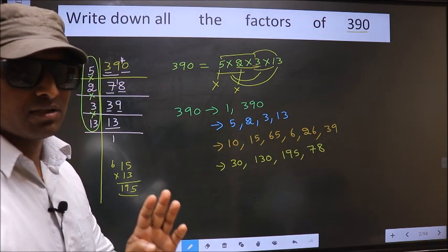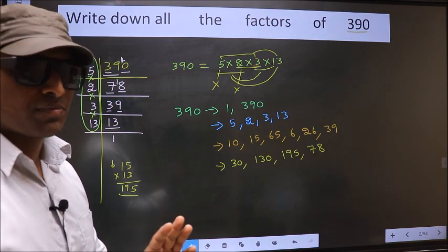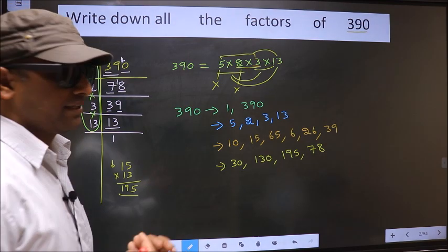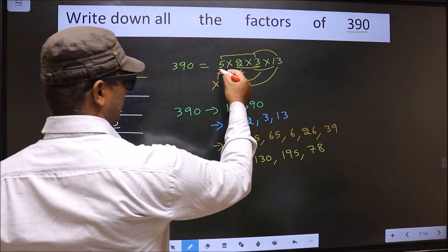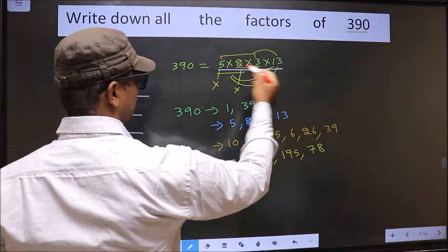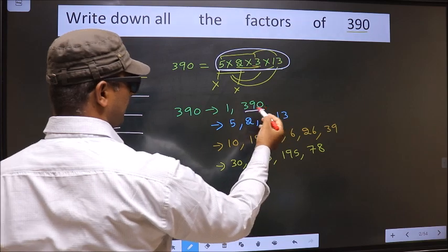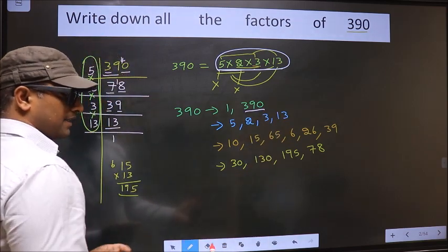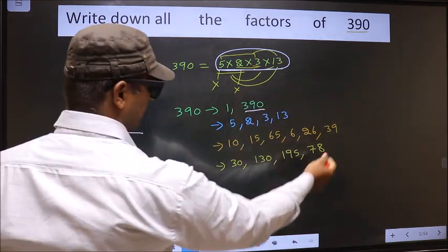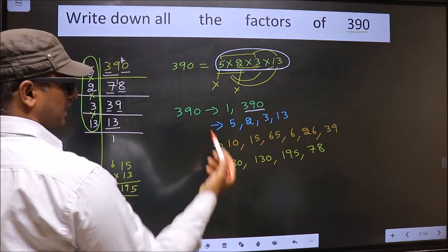Next. Now we should take the combination of 4 numbers. How do we do that? See. Here we have only 4 numbers. If we take all the 4 numbers, we get 390 itself.